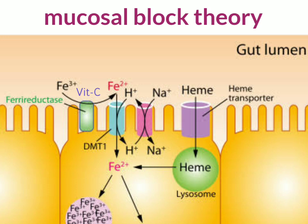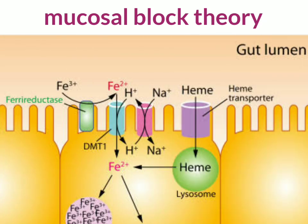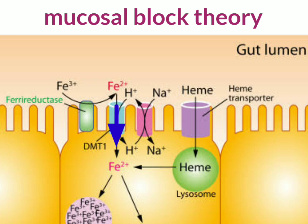Now that Fe3+ is converted into Fe2+, the enterocyte consists of two surfaces: the apical membrane, which is invaginated, and the basal membrane. The apical membrane contains a mucosal cell protein called divalent metal transporter 1, or DMT1. Since iron exists as Fe2+, the divalent form, it binds to DMT1 on the apical membrane, which allows the passage of Fe2+ into the mucosal cell.